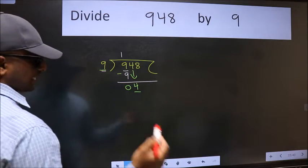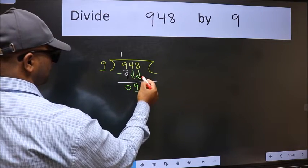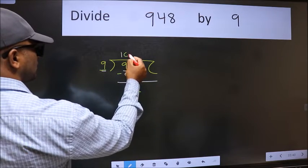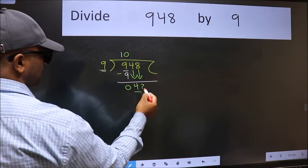So we should bring down the second number. And the rule to bring down the second number is we should put 0 here. Then only we can bring this number down.